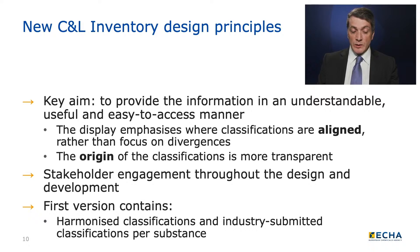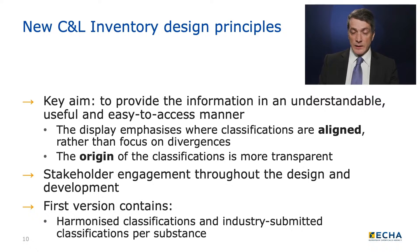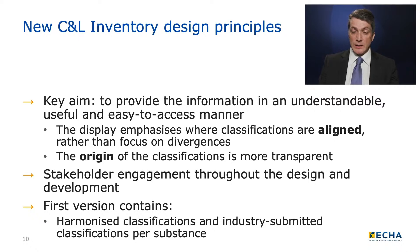There were a number of design principles used for developing the new CNL Inventory. The key aim was to provide the information in an understandable, useful, and easy-to-use manner. The key focus is to show the alignment of the industry data that has been submitted to ECHA. Every published classification is clearly stamped with its origin, the details of where it comes from, the substance identity and variance provided by industry, and other necessary information to ensure users can understand the CNL they are looking at. There has been continual stakeholder involvement to tweak the display and the data shown, and the first version contains harmonized classifications from CLP Annex 6 and industry-submitted classifications distinct per substance.